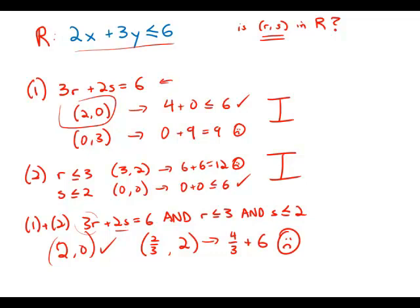So even with both statements combined, we can pick some points that satisfy the inequality and some points that don't satisfy the inequality. And so that means even with both statements combined, we still have insufficient information to answer the question whether rs is in region R.